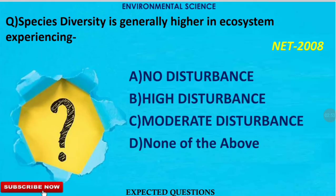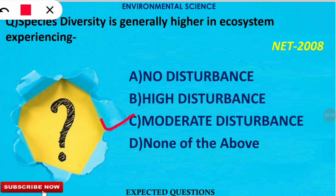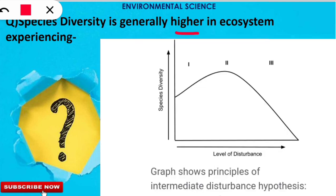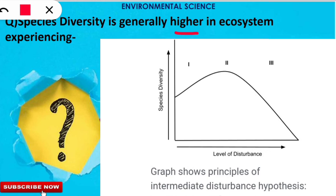The next question is: species diversity is generally higher in ecosystems experiencing what kind of disturbance? The correct option is option C — moderate disturbance causes higher diversity. According to the intermediate disturbance hypothesis, species diversity is highest at moderate disturbance levels. As shown in the graph, at low disturbance competitive exclusion reduces diversity, and at high disturbance increased species movement raises competition, also reducing diversity.